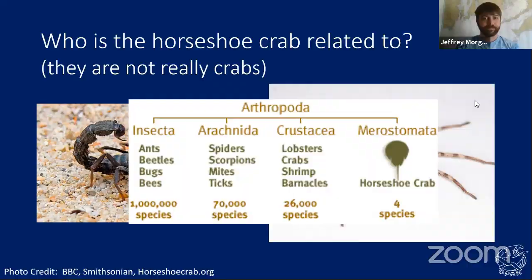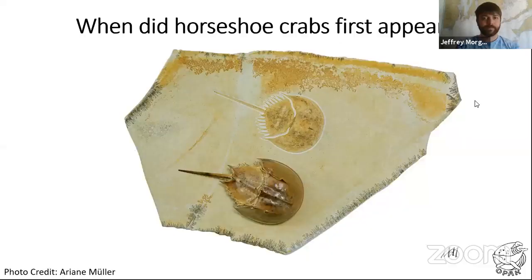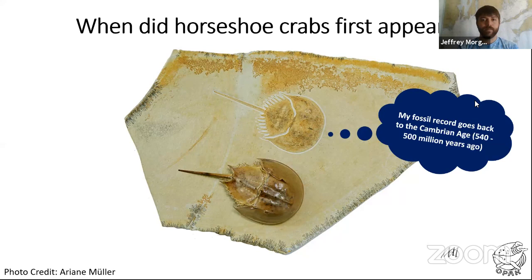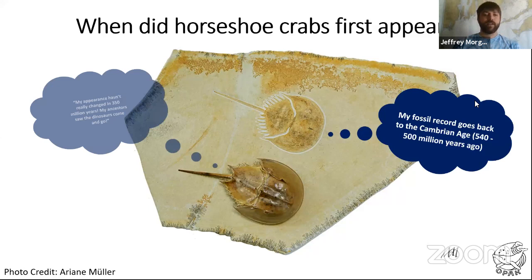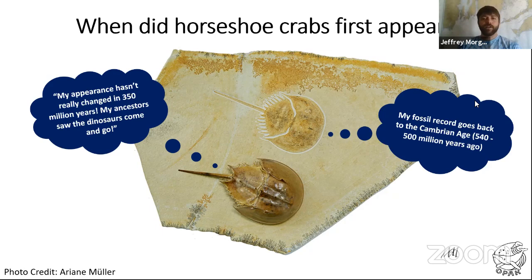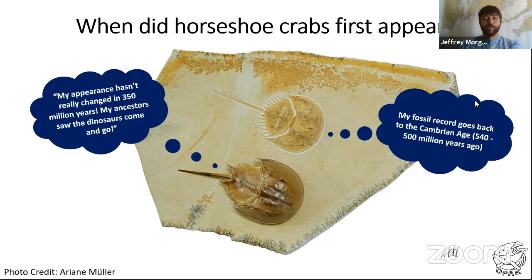Horseshoe crabs have been on this planet for about 500 million years. A lot of people call them a living fossil, which I appreciate, but I don't want you to think that the horseshoe crabs we see on the beach today have been alive for 500 million years. These horseshoe crabs haven't really changed their appearance in about 350 million years. So the ancestors of the horseshoe crabs we find today pretty much resemble what we would have seen 350 million years ago — about 150 million years before the dinosaurs were even on this planet.